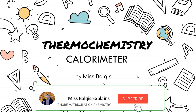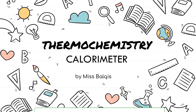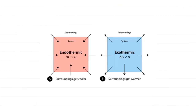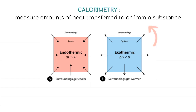Assalamualaikum warahmatullahi wabarakatuh and hello everyone. In this video, we are going to learn about subtopic number 2 of thermochemistry called calorimeter. Let's recall our previous lessons where we learned about change of heat in a reaction known as enthalpy, delta H. Now we are going to learn how this heat can be measured. One technique we can use to measure the amount of heat involved in a chemical or physical process is calorimetry.